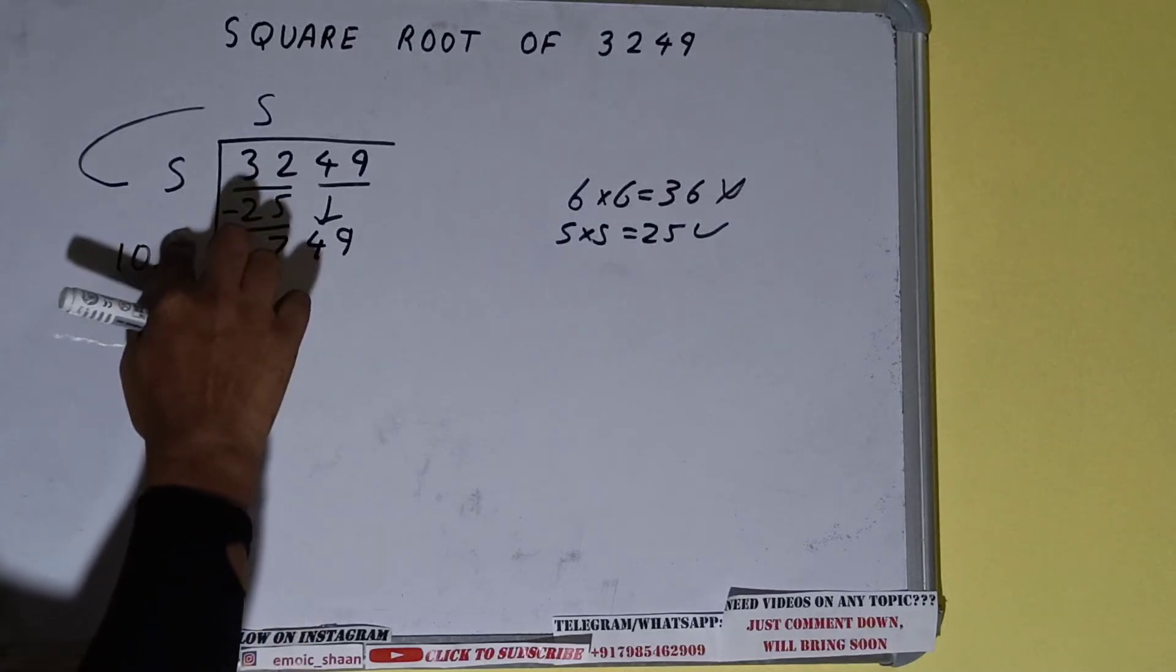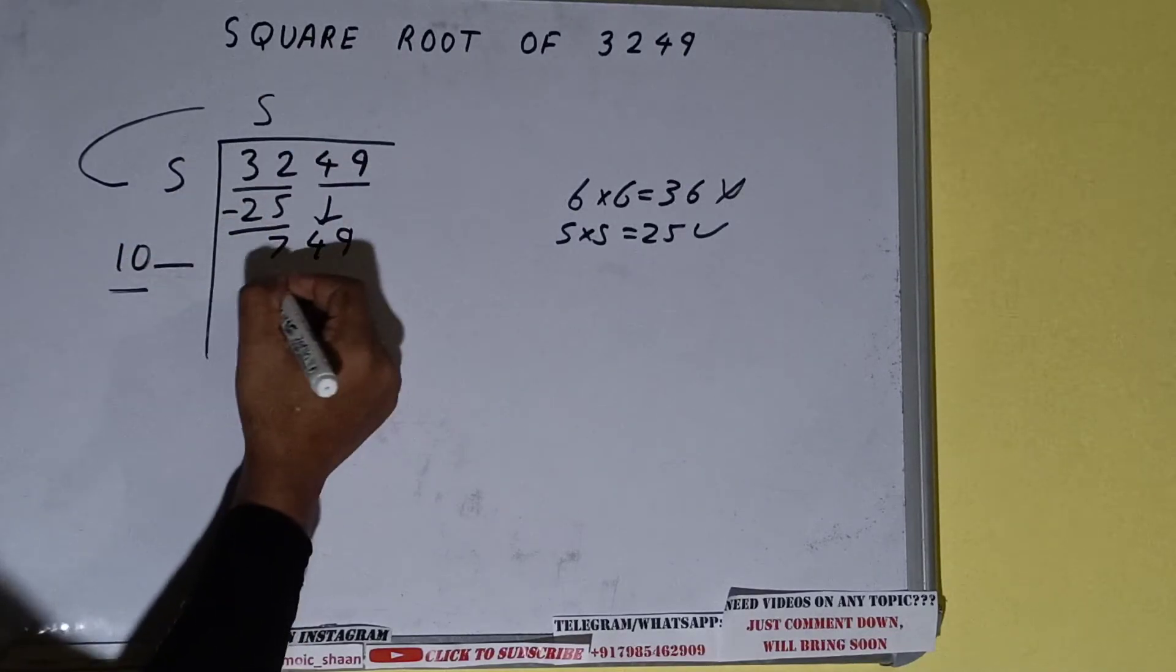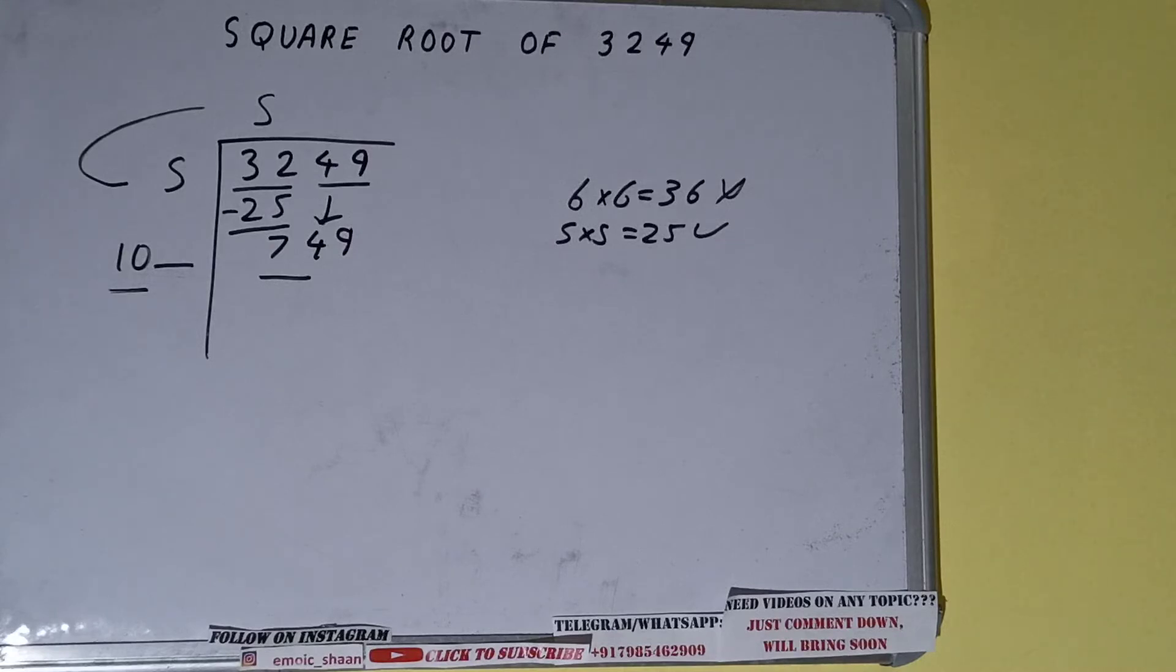Now whatever number we write here, we have to write here also. So we can compare this 10 with this 74. So 10, 7 size 70, right? So we can try 7 times.